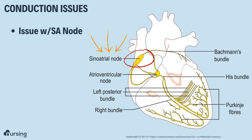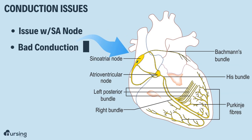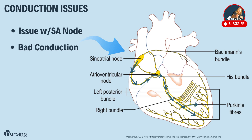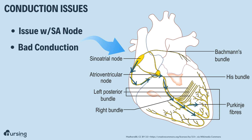We don't have proper conduction from the SA node. A normal electrical conduction system originates at the SA node, going down to the AV node, through the bundle of His, and terminating in those Purkinje fibers. In AFib, we actually have an issue with that SA node.